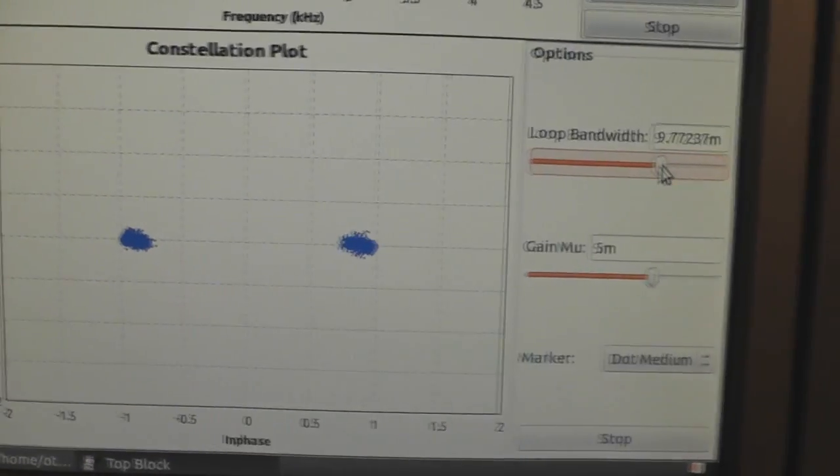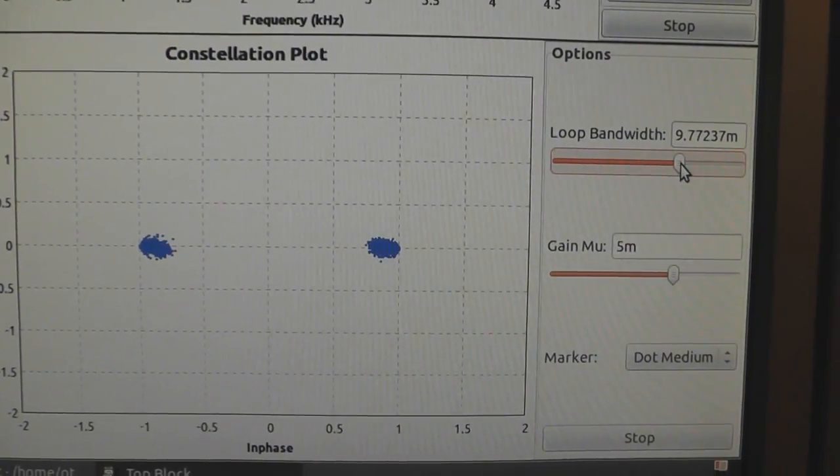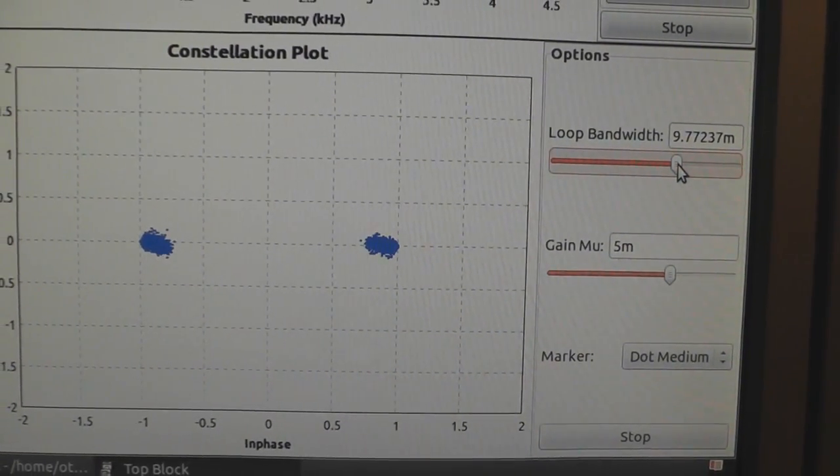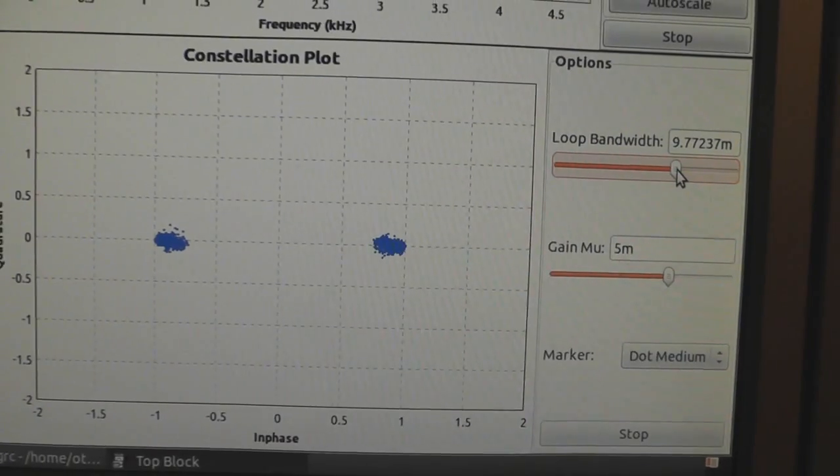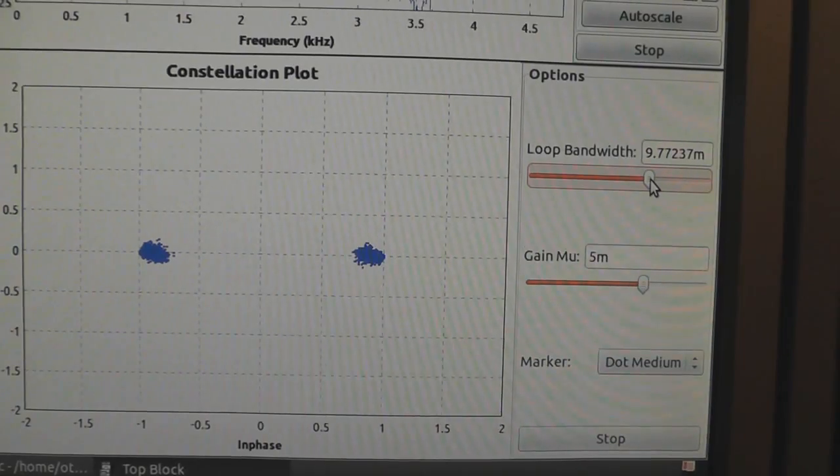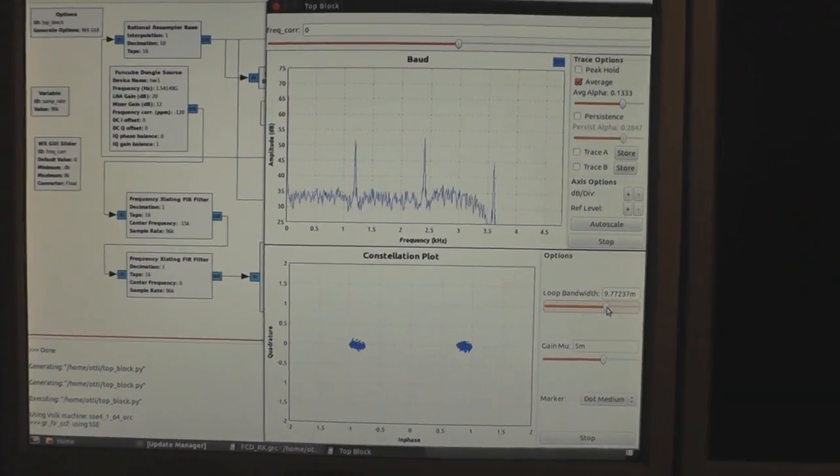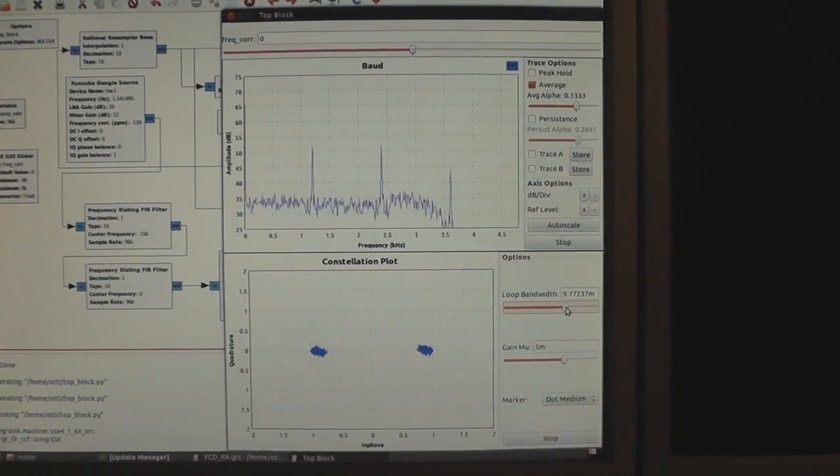Basically, if you get this clean constellation, you can just drop it into a file sync or stream it out of a network as a raw bit stream. And you can do all sorts of stuff with this demodulated bit stream. This is basically how it goes. Thanks for watching.